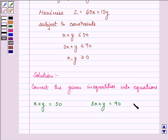Now we need to find two points for each equation. For the first one, when x = 0, y = 50, and when y = 0, x = 50.